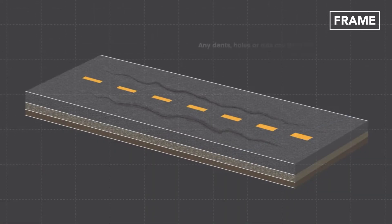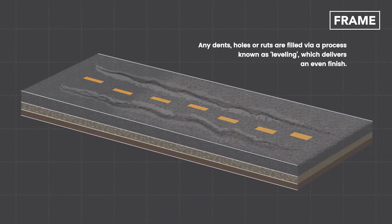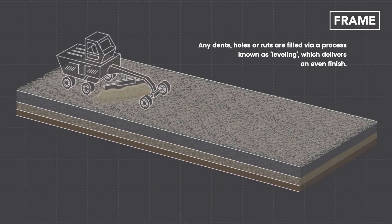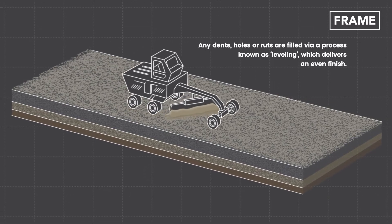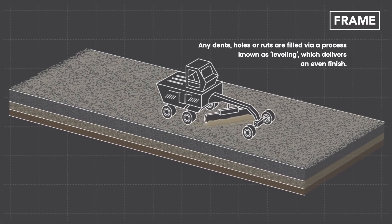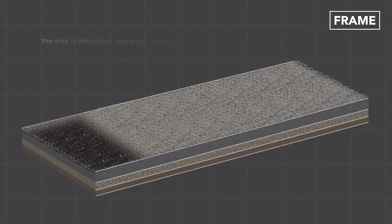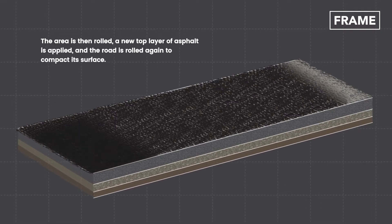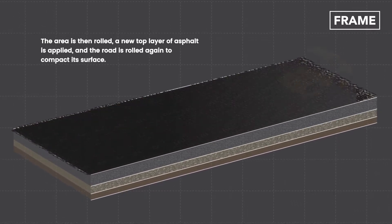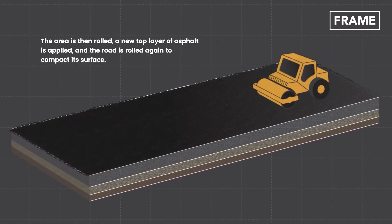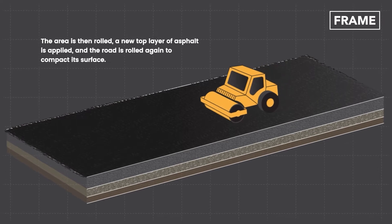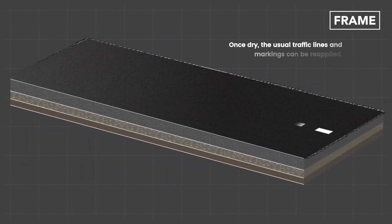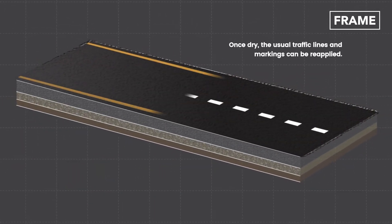Any dents, holes, or ruts are filled via a process known as leveling, which, as its name suggests, delivers an even finish. The area is then rolled, a new top layer of asphalt is applied, and the road is rolled again to compact its surface. Once dry, the usual traffic lines and markings can be reapplied.